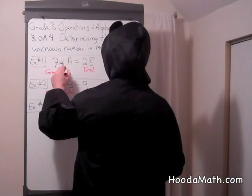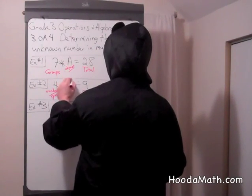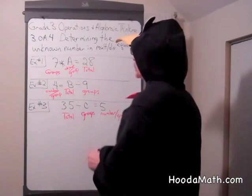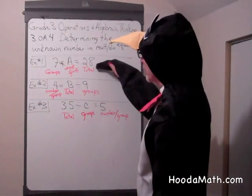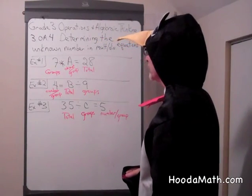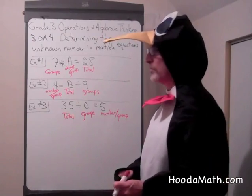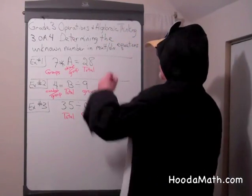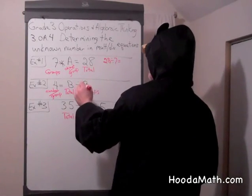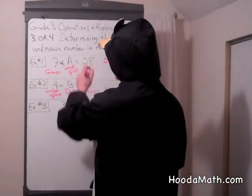So we could say objects per group, for one group. If we know the total, we divide the total by the number of groups to find how many objects are in one group. 28 divided by 7 equals 4. And we could check it by saying 7 times 4 is 28.